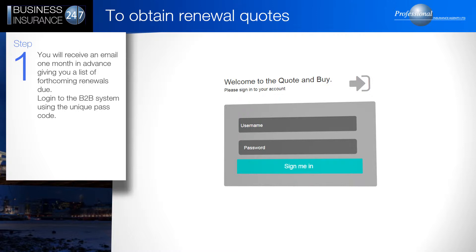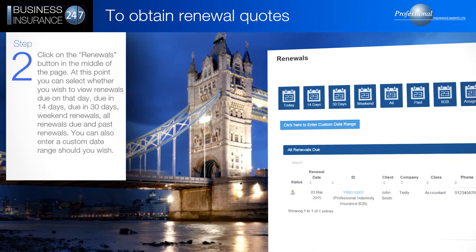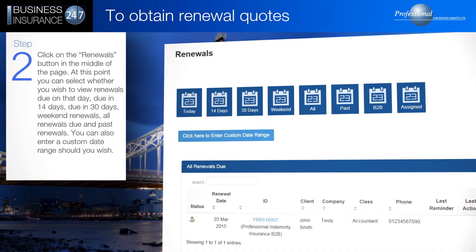Log in to the B2B system using the unique passcode. Click on the renewals button in the middle of the page.